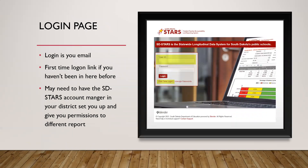This is the link to get to the SD Stars longitudinal data system website. On the front page, click on the graphic to go to the login page. Your login is usually your email address. If you're a first-time user, click the link for first-time users. If you still can't get in, contact your district's SD Stars accounts manager — every district has one — and they can add you to the system and grant permissions for the special ed information.